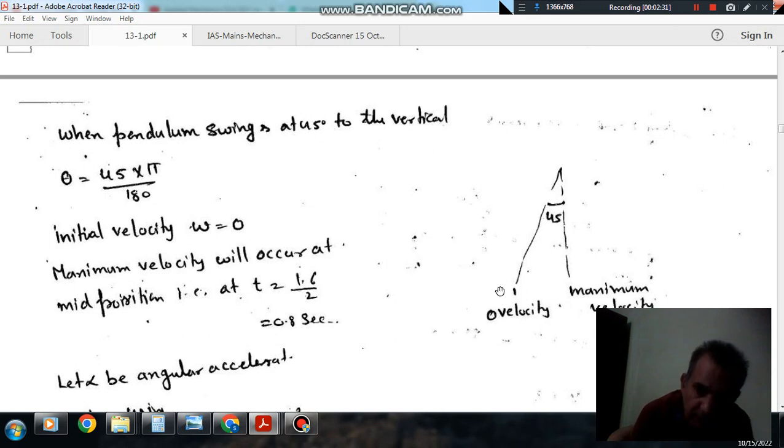Now this is your pendulum and it swings with an angular amplitude of 45 degrees or in terms of radians it is pi by 4. And this is the extreme position, at this position the velocity is zero and because it has to go back from this position, at this position the velocity is zero.